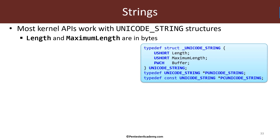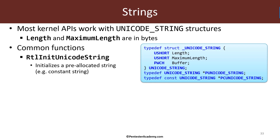Many APIs use this particular structure, so we need to know how to work with it. A few common functions exist for working with Unicode strings. The first is RtlInitUnicodeString, which is the simplest — it initializes a Unicode string based on a C-style string. If you have a C-style string already allocated and null terminated, RtlInitUnicodeString will calculate the length and set the length and maximum length accordingly, pointing the buffer member to that C-style string. There is no cleanup function for it since nothing needs to be freed.